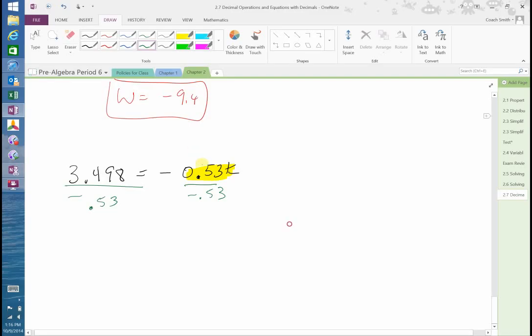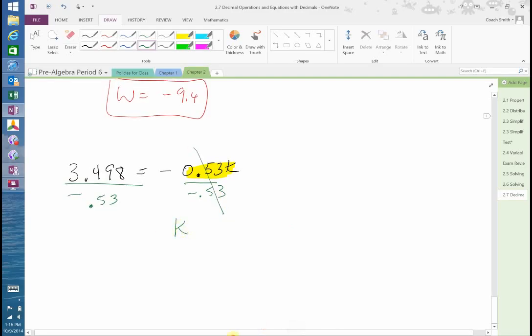Over here, it cancels, leaving us with k is equal to negative 0.53 into 3.498. Okay? Now, we have an issue. Because we have a decimal here, I have to move that decimal once, twice to the right. What I do on the outside, I must do on the inside. So, I must move this one once, twice. So, that's negative 53 into 349.8 is equal to k.